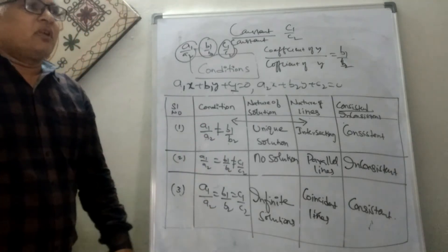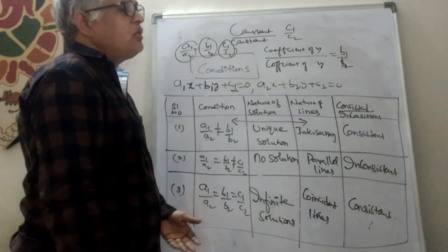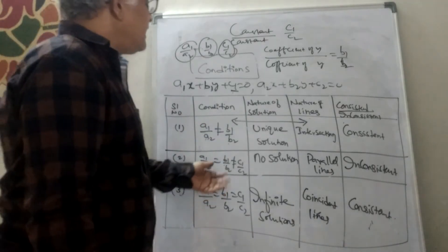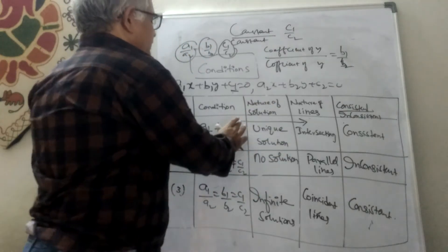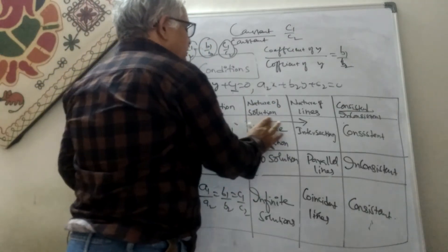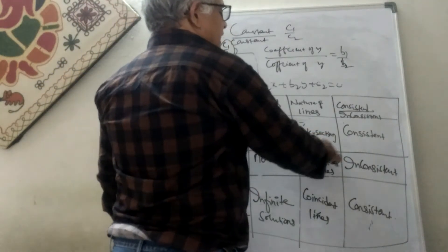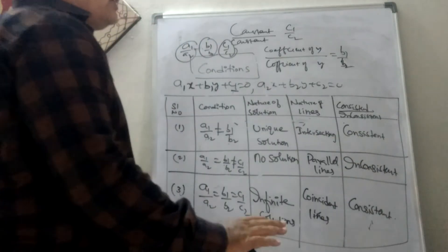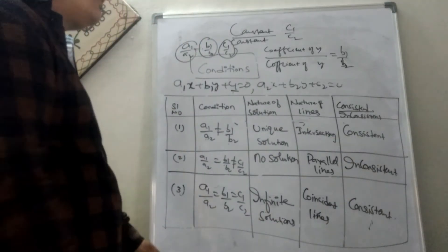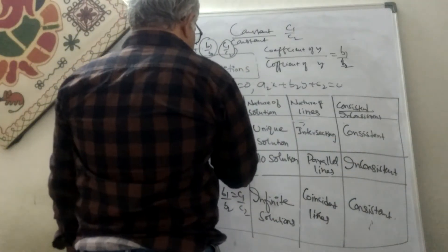If a1/a2 is not equal to b1/b2 — the first ratio is not equal to the second — then there will be a unique solution. The lines are intersecting lines and the system is consistent.